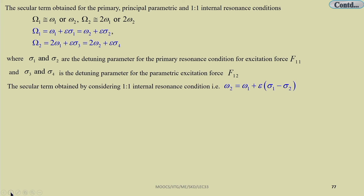As we are taking two frequencies ω₁ and ω₂ (modal frequencies) and external excitation, we use four detuning parameters σ₁, σ₂, σ₃, σ₄ to express the nearness of the response to those external excitation frequencies. By taking all these frequency combinations we can apply the method of multiple scales to study the resonance conditions.